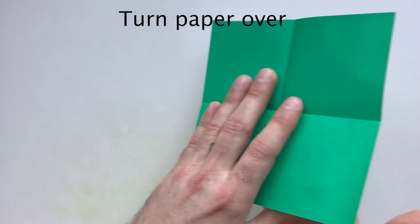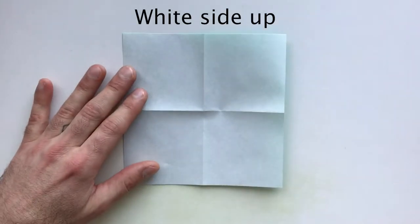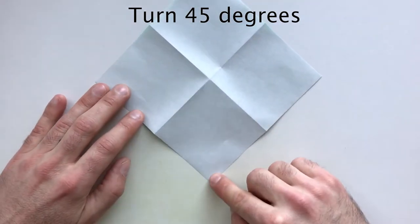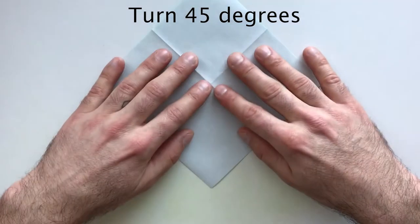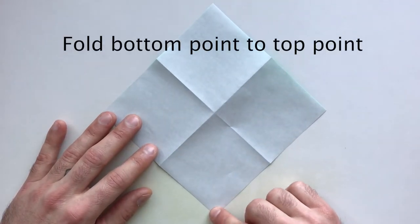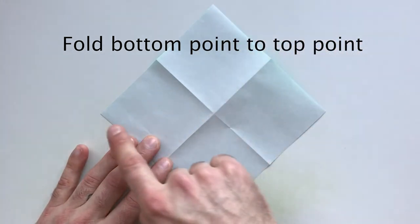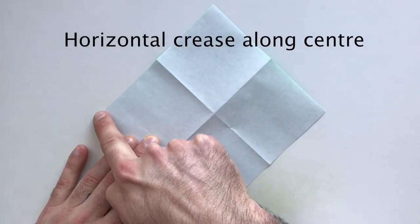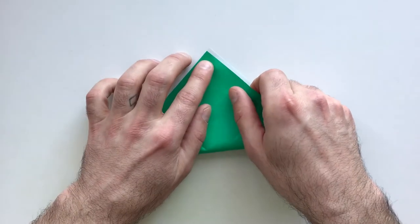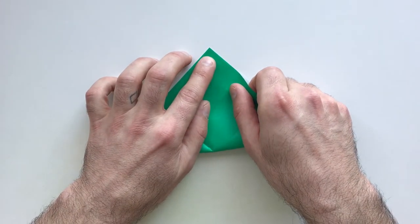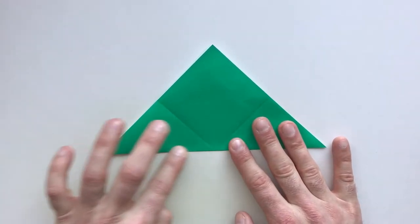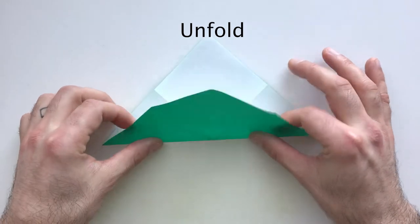Now turn the paper back over so the white side's facing up and turn 45 degrees so that the points are facing towards you. Then fold the bottom point up to the top point to make a horizontal crease connecting these two points, and unfold.